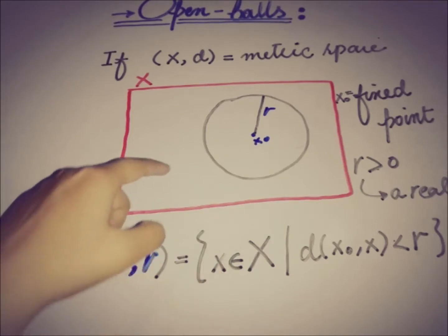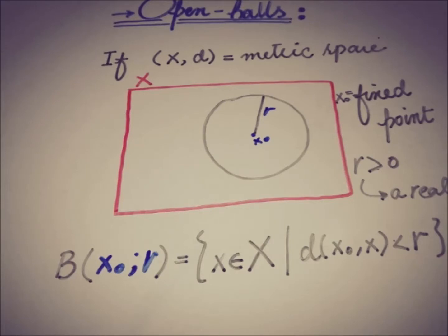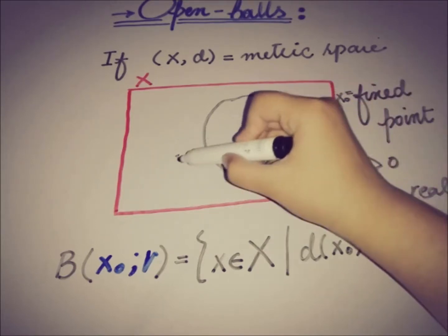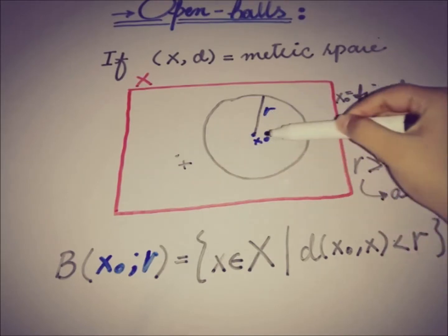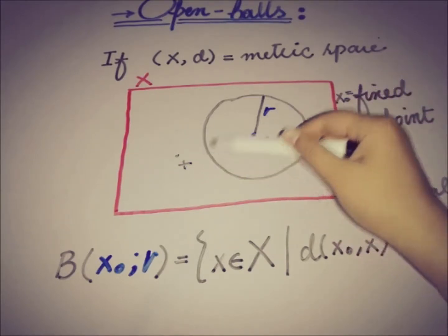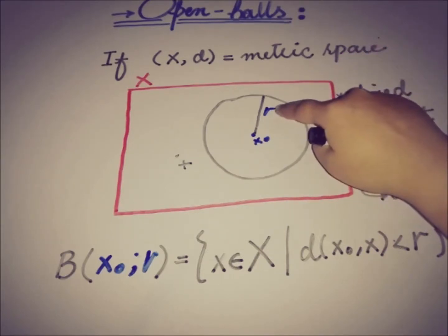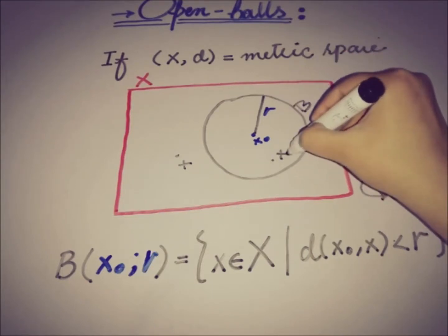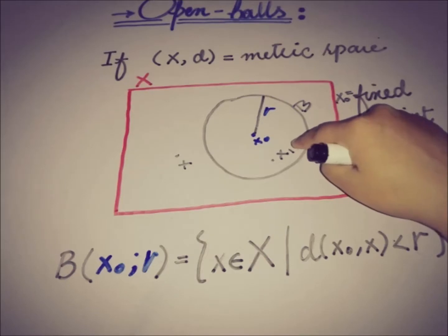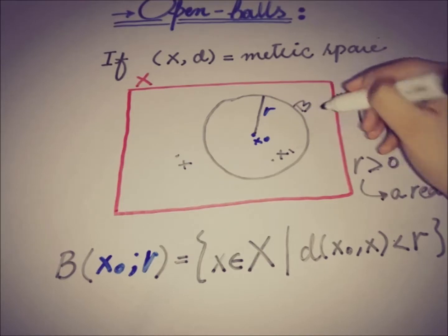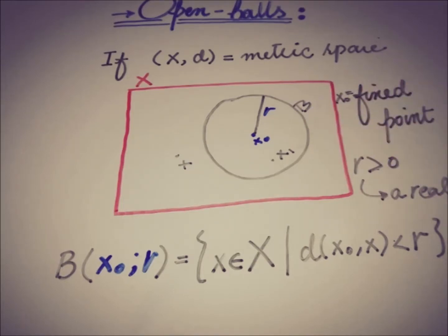The open ball B(X naught, R) is the set of all points X in the space such that the distance between X and X naught is smaller than R. If the distance is greater than R, that point is outside the open ball. If the distance of a point X₁ from X naught is smaller than R, then X₁ lies inside the open ball B.